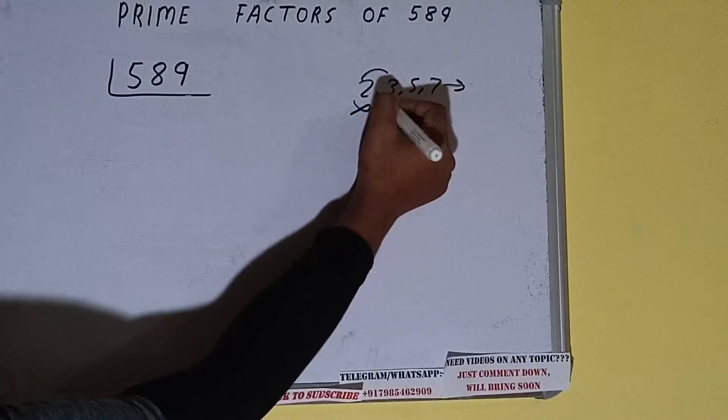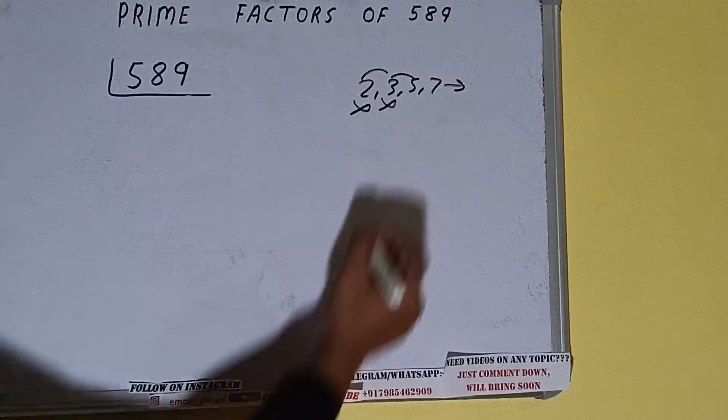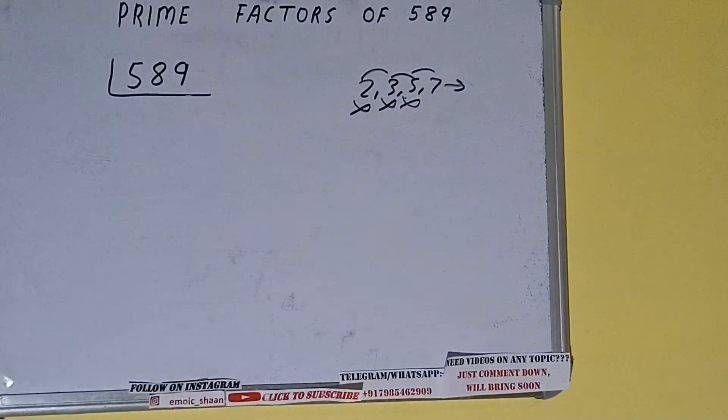Let's check with 5. The last digit is neither 5 nor 0, so it is not divisible by 5. Let's check with 7. 7 is 56, 2, 9. With 7 also not divisible.